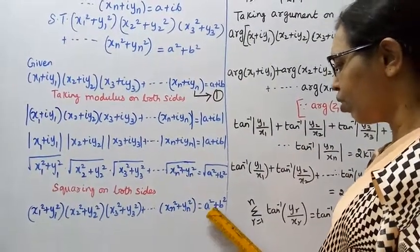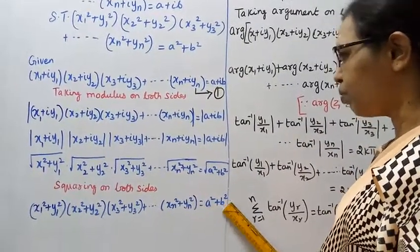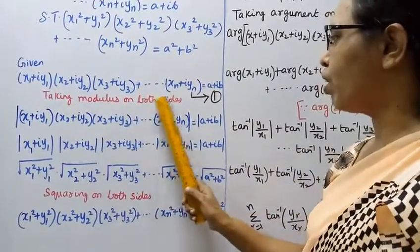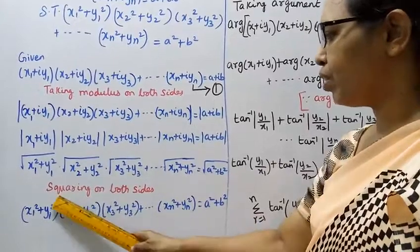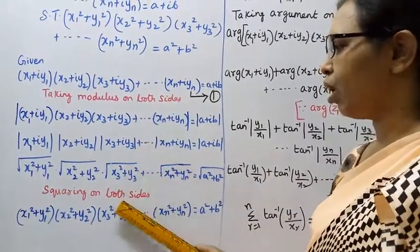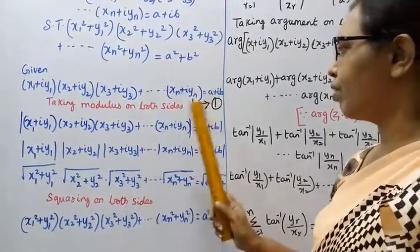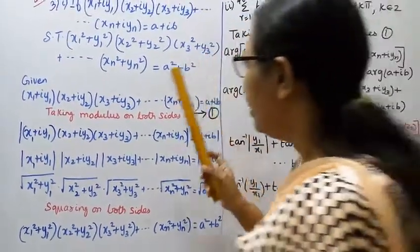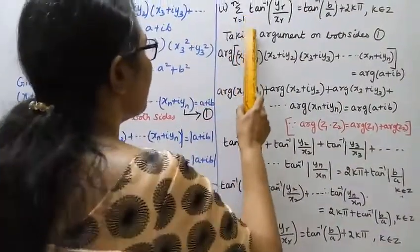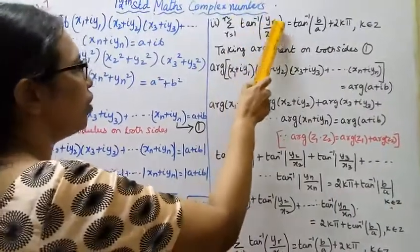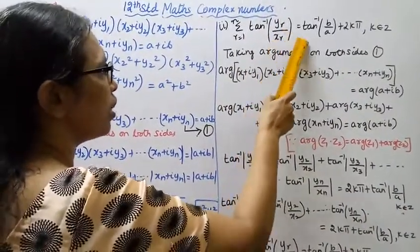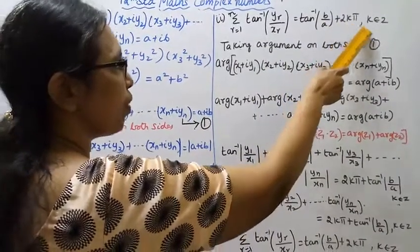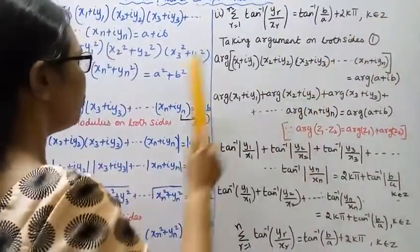After squaring on both sides: (x1² + y1²)(x2² + y2²)(x3² + y3²)...(xn² + yn²) = a² + b². Taking modulus on both sides, then squaring on both sides gives us the result. Hence proved. Second subdivision: Σ (r = 1 to n) tan⁻¹(yr/xr) = tan⁻¹(b/a) + 2kπ, where k belongs to ℤ.